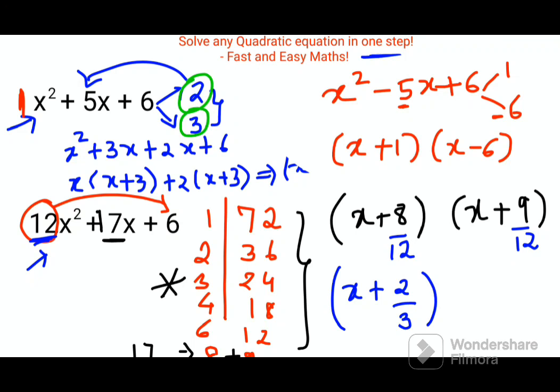So your final answer will be x + 2/3 because both of them are getting cancelled, and here you will have x + 3/4. You can leave your answer at this particular point, or if you want you can take the LCM of individual brackets. So we will have 3x + 2 and here you will have 4x + 3. Either way is absolutely fine.